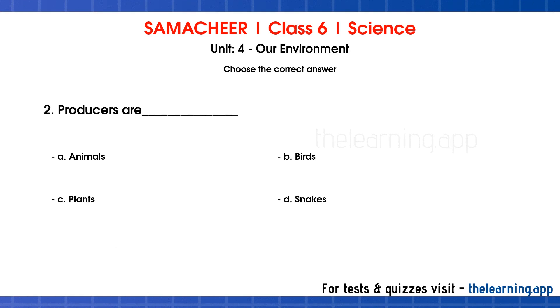Second question: Producers are dash. The options are A. Animals, B. Birds, C. Plants, D. Snakes. The correct answer is option C — Plants.